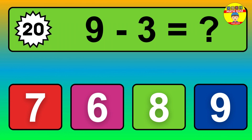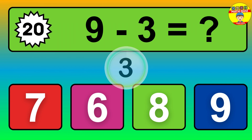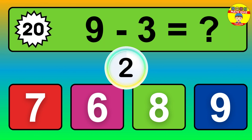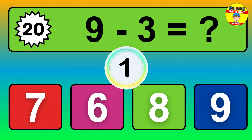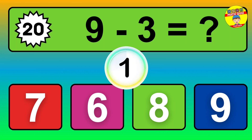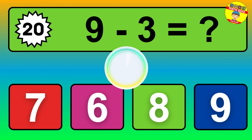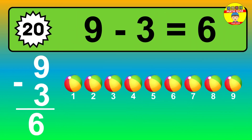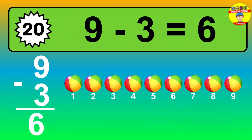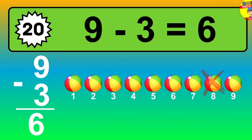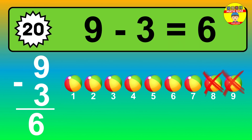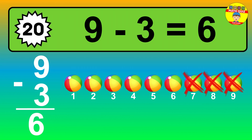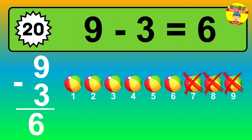Question 20. 9 minus 3 equals what? The answer is 9 minus 3 is 6. Let's count it. 1, 2, 3, 4, 5, 6.